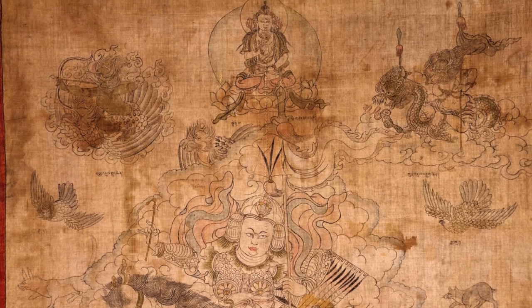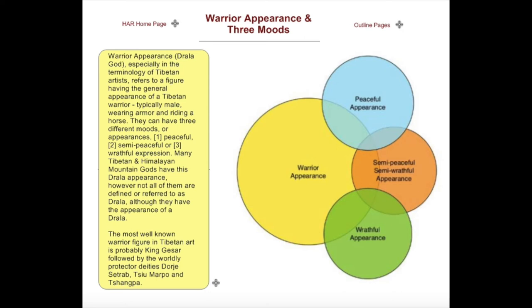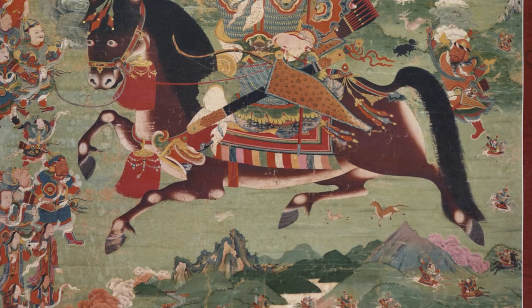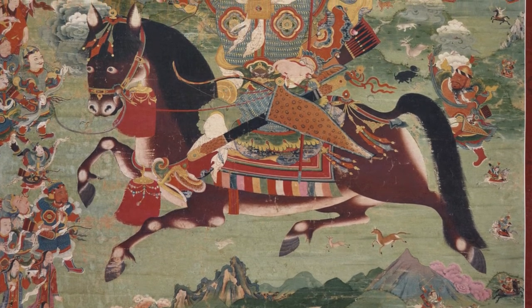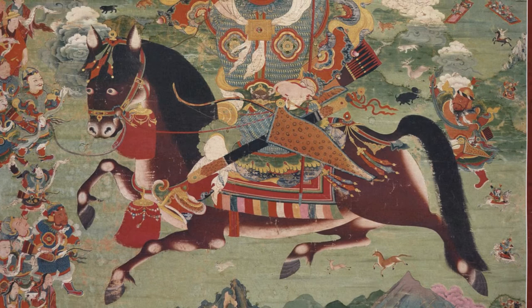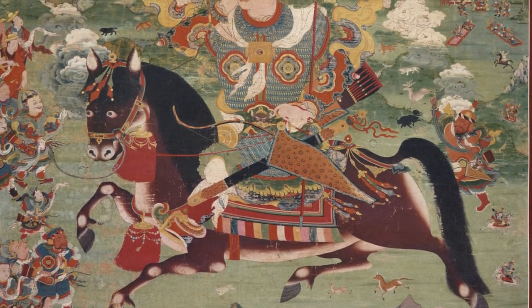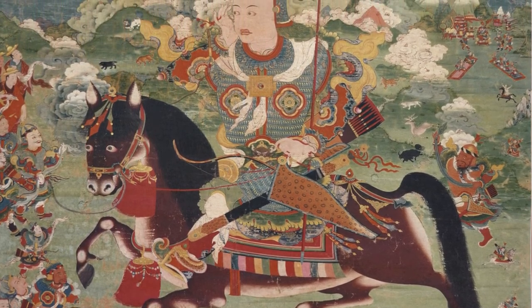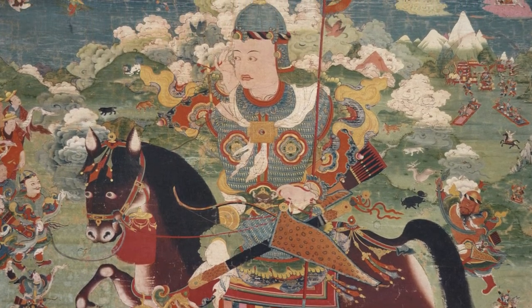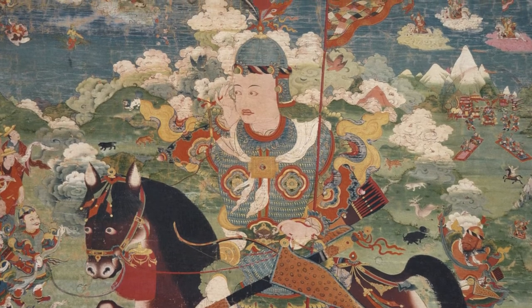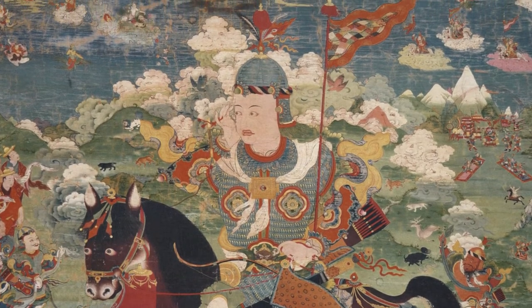Sometimes the drala figure can be a little bit more wrathful in appearance, sometimes a little less, and sometimes it can be very peaceful. One of the most famous of the drala — the warrior appearance figures we find in art — is actually King Gesar. We don't normally refer to King Gesar as a drala, but in terms of art he has drala appearance. That is what his basic form is drawn from: the drala gods of Tibet.